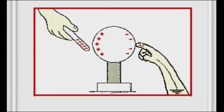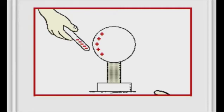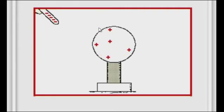we connect the ball to the earth, and the negative charges, which are freer to move, move to the earth. And at the end of the day, we have only positive charges on this ball. So we have successfully made this ball become positively charged.